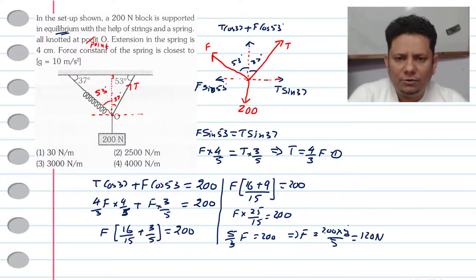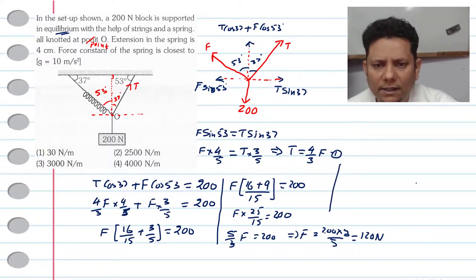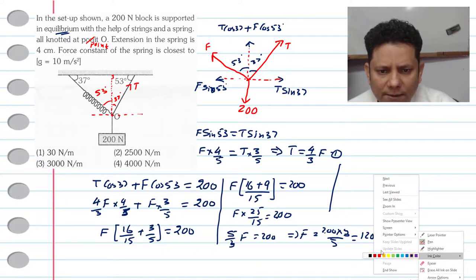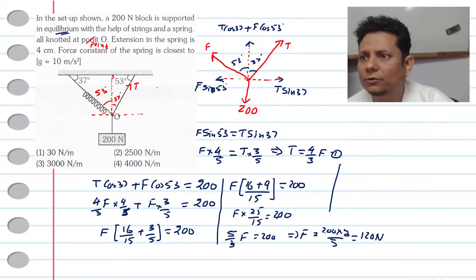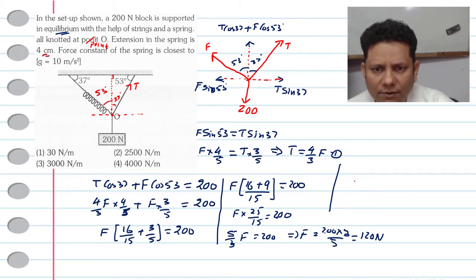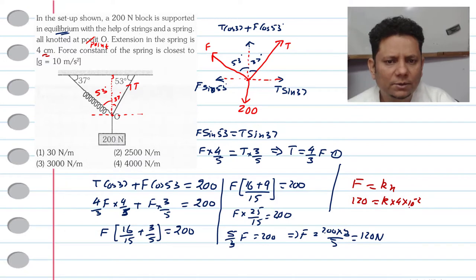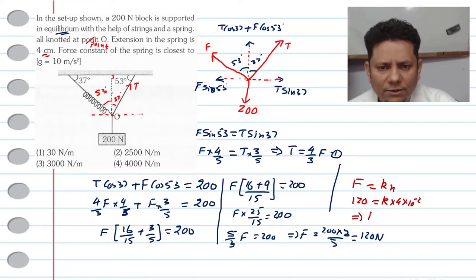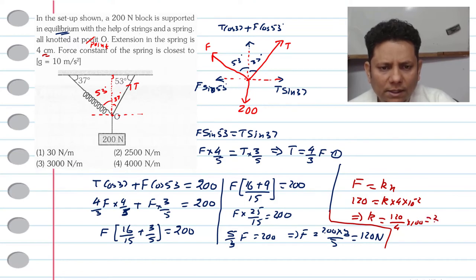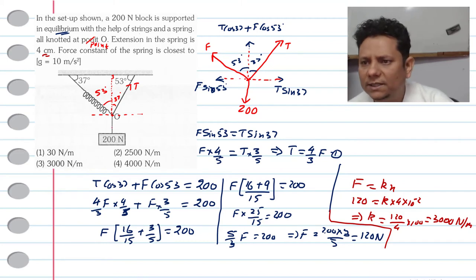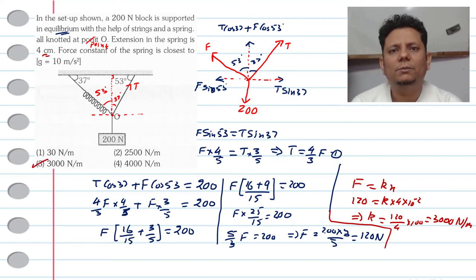So the spring force F = 120 N. We know that F = KX, where extension X is given as 4 cm = 4 × 10⁻² m. So 120 = K × 4 × 10⁻², which implies K = 120 / (4 × 10⁻²) = 120 × 100 / 4 = 3000 Newton per meter. This means option number 3, 3000 Newton per meter, is the correct answer.